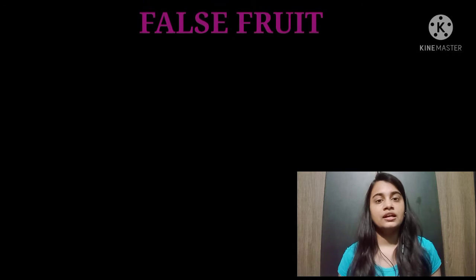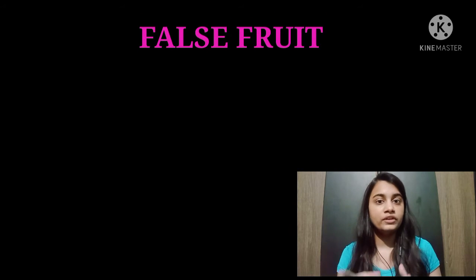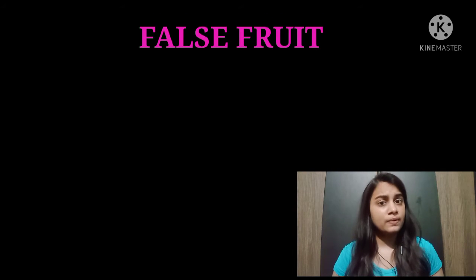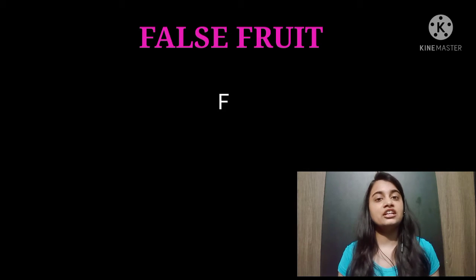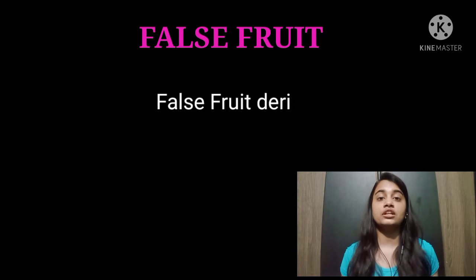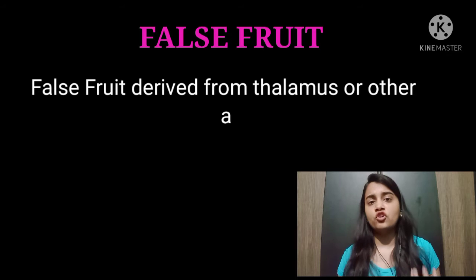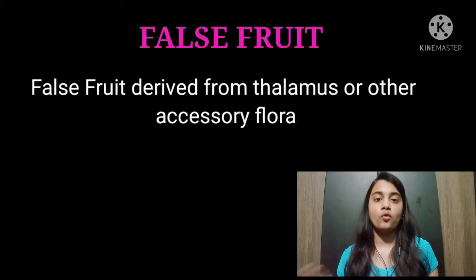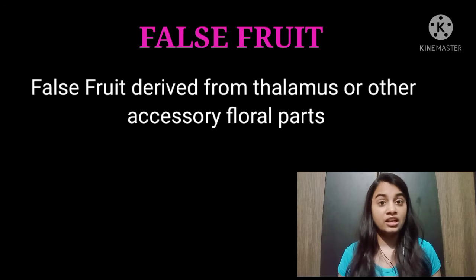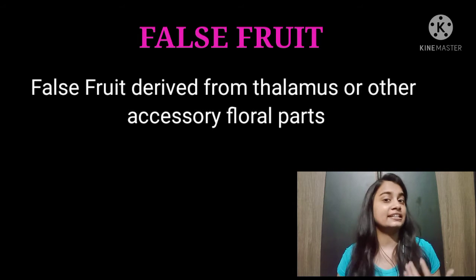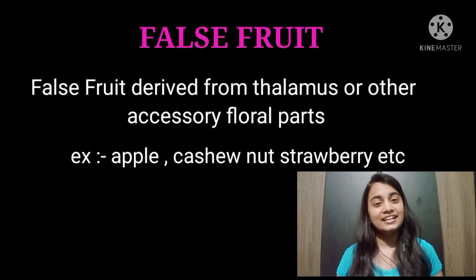False fruits — what happens is that normally ovary is converted into fruit. But in some plants, parts other than the ovary also participate in fruit formation, such as thalamus or other floral parts. Fruits in which any part other than the ovary participates in fruit formation are called false fruits. Examples are apple and cashew nut.